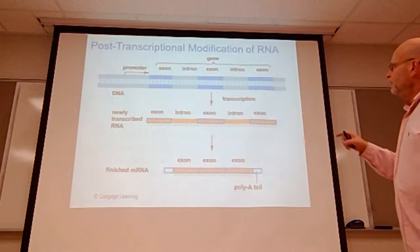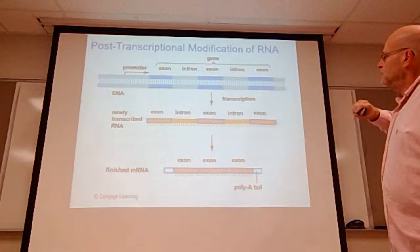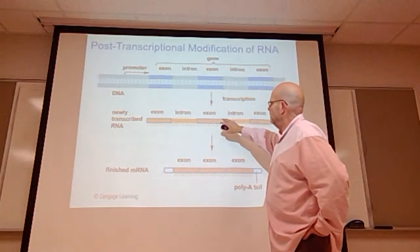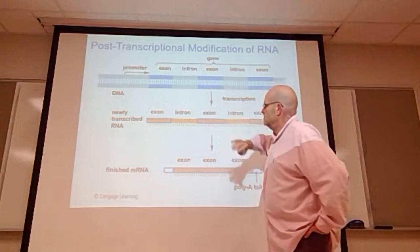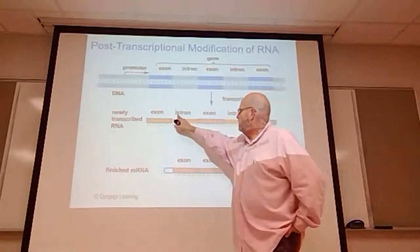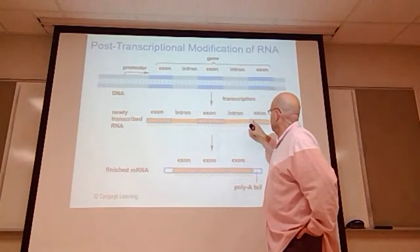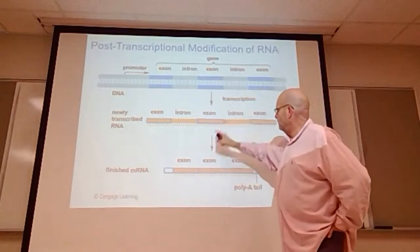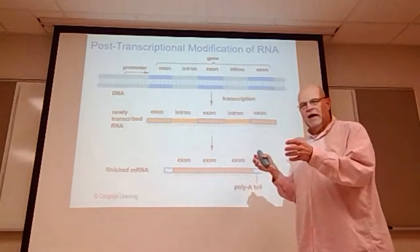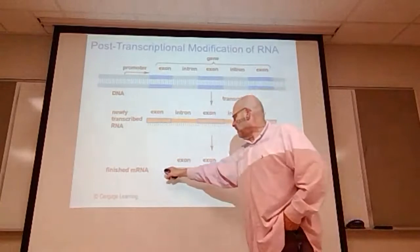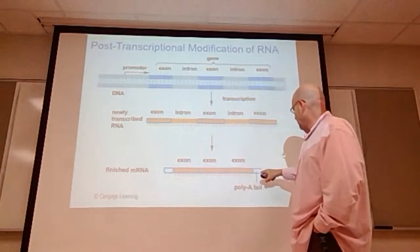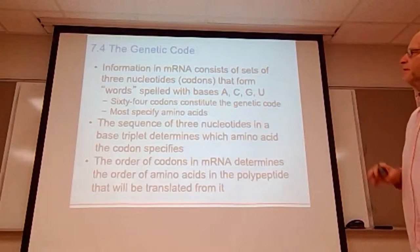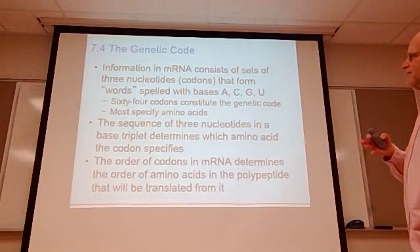Here is a post-transcriptional modification of RNA. At the top you see the DNA; everything in brackets is produced during transcription, but certain areas are not needed. Those introns are removed and the three exons are put together in a much more compact structure, and there is the poly-A tail.